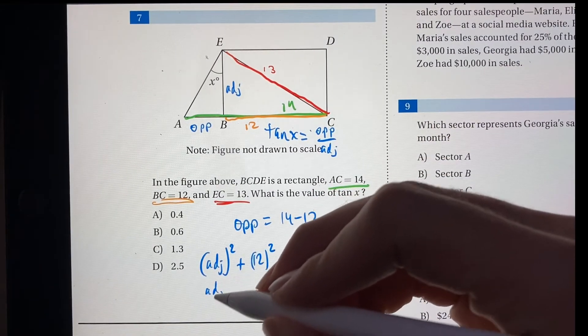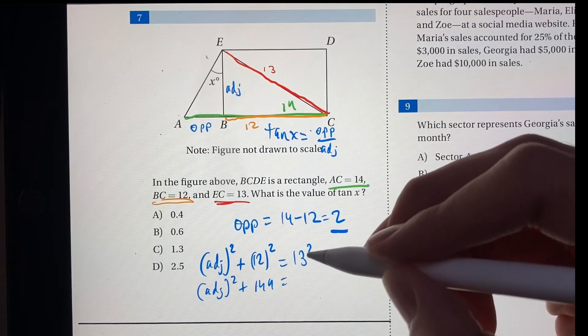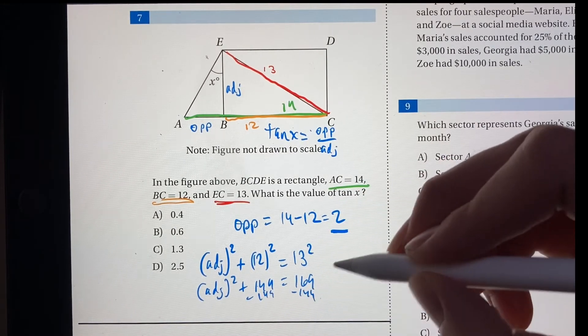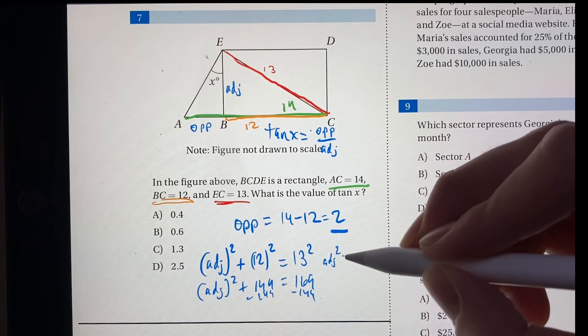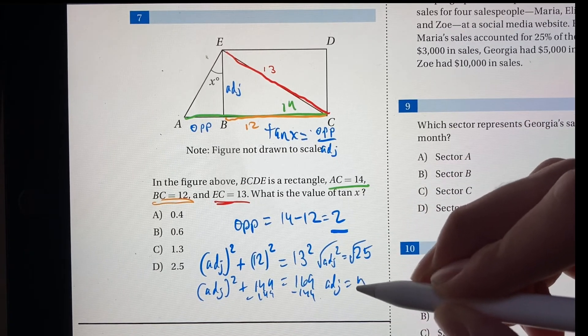So if we simplify this, we have adjacent squared plus 12 squared, which is 144, equals 13 squared, which is 169. If we subtract 144 from both sides, we get that adjacent squared is equal to 25. If we take the square root, we get the adjacent side is equal to 5.